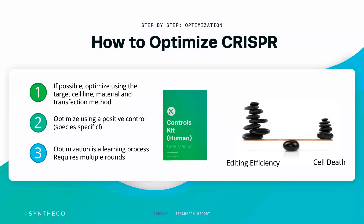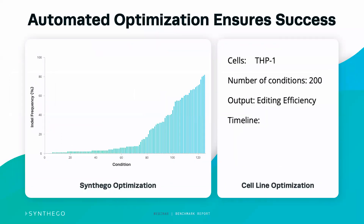So how do we optimize at SynthaGo? We're very lucky in that we have an automated facility which allows us to do this at an immense scale — we can test up to 200 conditions to identify the best way of transfecting any particular cell line. In this example, we're looking at the optimization curve for THP1 cells, an immune cell line that can be a little tricky to work with. Every single one of these bar graphs represents a different set of electroporation parameters, and the output is editing efficiency. We're actually genotyping and measuring the editing efficiency in every single condition across all 200 conditions at one time.